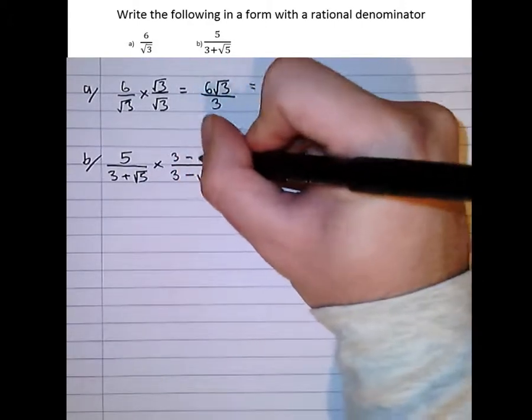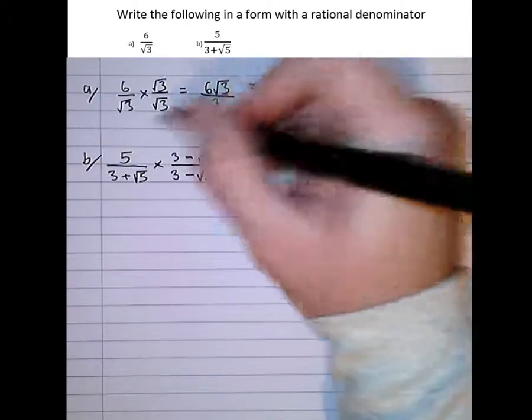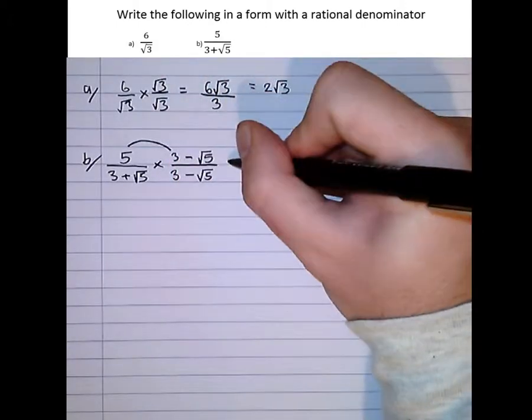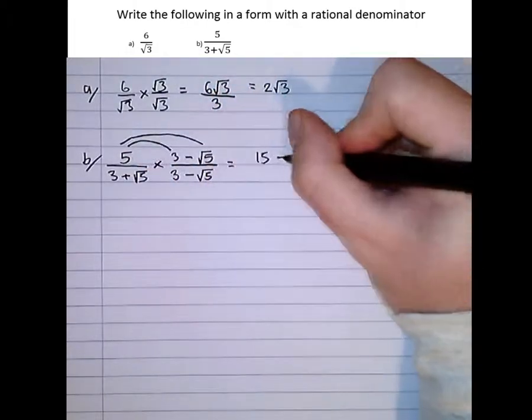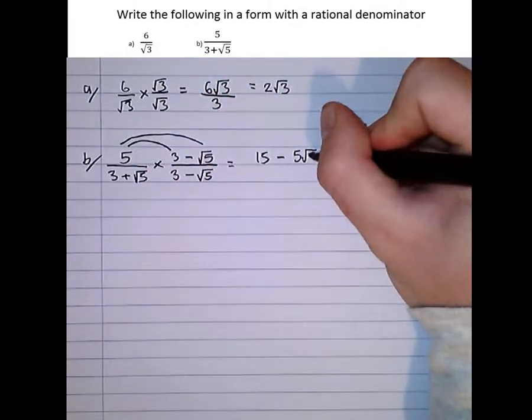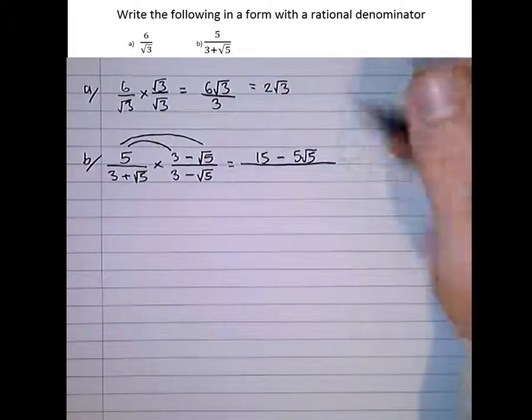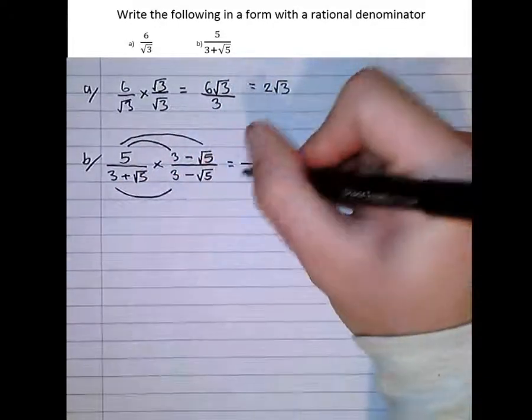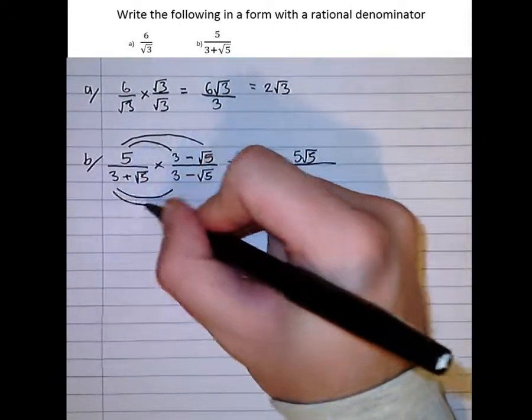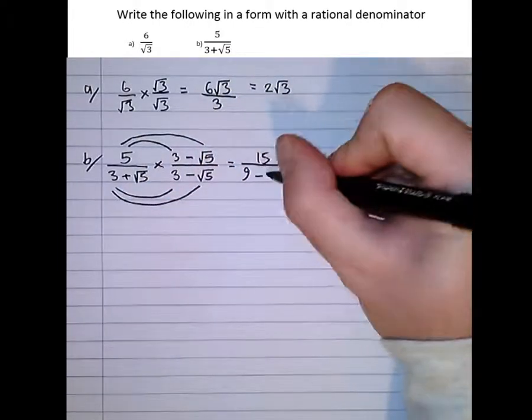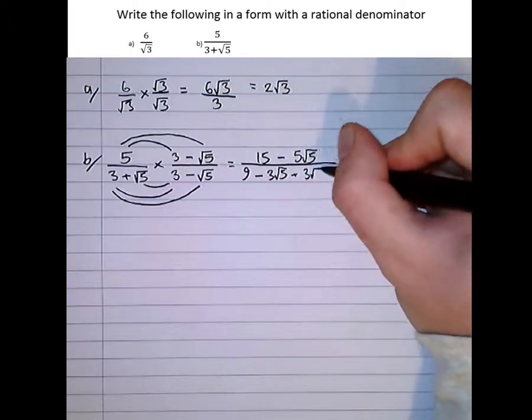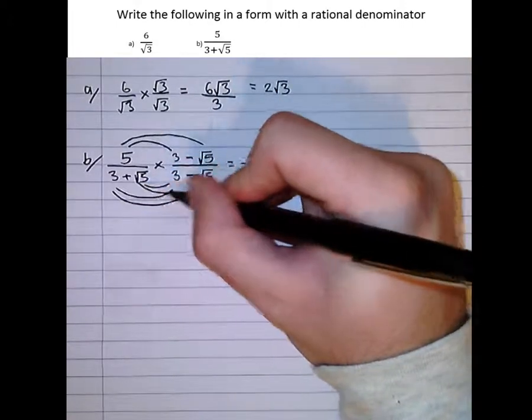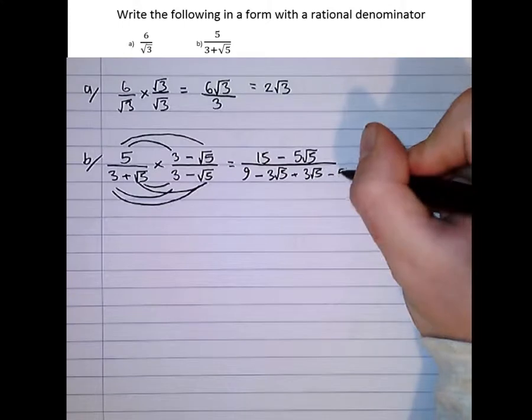And if we do that at the bottom, do it at the top as well. So multiply it out now. 5 times 3 is 15, minus 5 root 5, over 9 minus 3 root 5 plus 3 root 5 minus 5.